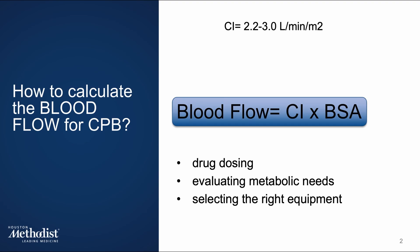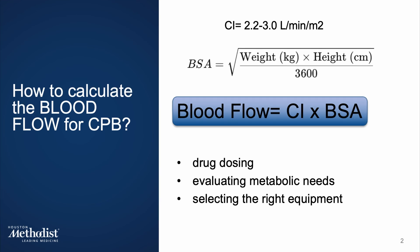To determine the flow, we use the cardiac index, which represents the blood flow per square meter of body surface area (BSA). Typically, the cardiac index ranges from about 2.2 to 3 liters per minute per square meter. We multiply this by the patient's body surface area to determine their individualized target flow. The exact value we choose within that range depends on the clinical situation — for example, a patient with a hypothermic temperature or low metabolic demands may require less flow, while others may need more support.